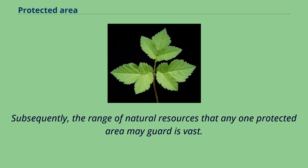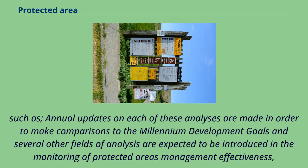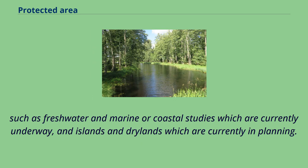The range of natural resources that any one protected area may guard is vast. Many will be allocated primarily for species conservation, whether flora or fauna or the relationship between them, but protected areas are similarly important for conserving sites of cultural importance and considerable reserves of natural resources. Annual updates on these analyses are made to compare progress against the Millennium Development Goals, and several additional fields are expected to be introduced in monitoring of protected areas' management effectiveness, such as freshwater and marine or coastal studies, and islands and drylands.